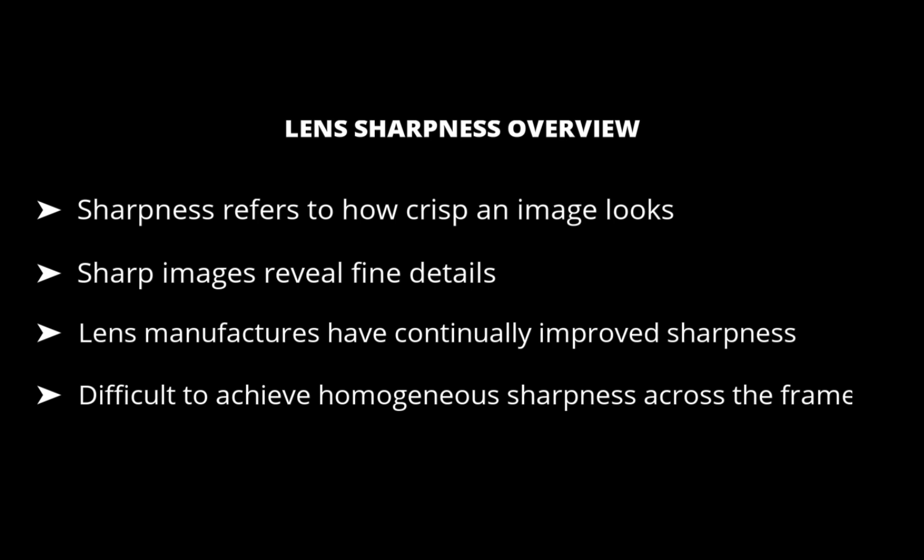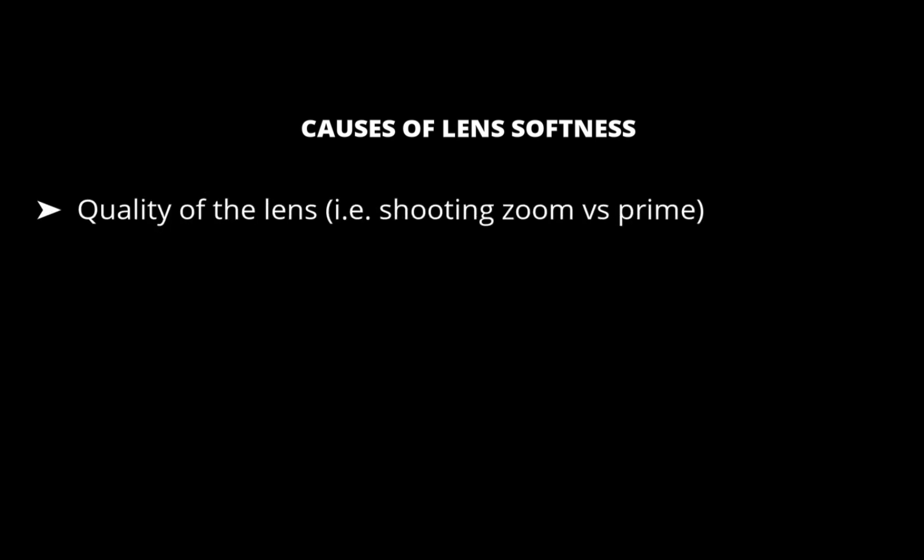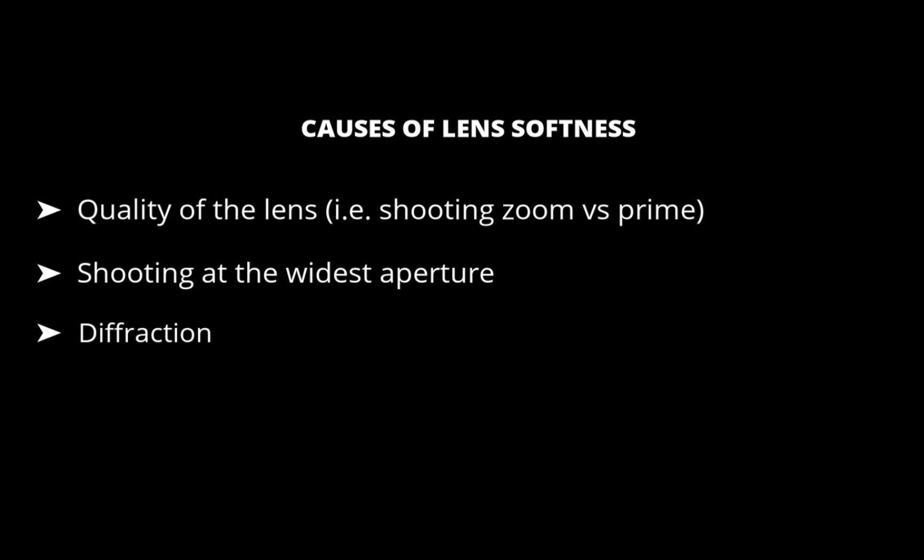Now let's go on to the causes of lens softness. DxO says various factors contribute to lens softness. The first is the quality of the lens — softness is more pronounced in zooms rather than primes because of their more complex design. The second cause is shooting with the widest aperture, where the corners of a photo will often be softer than the center. The third cause is shooting at a very small aperture, where diffraction makes it impossible to obtain perfectly sharp images, and this diffraction affects the entire frame.